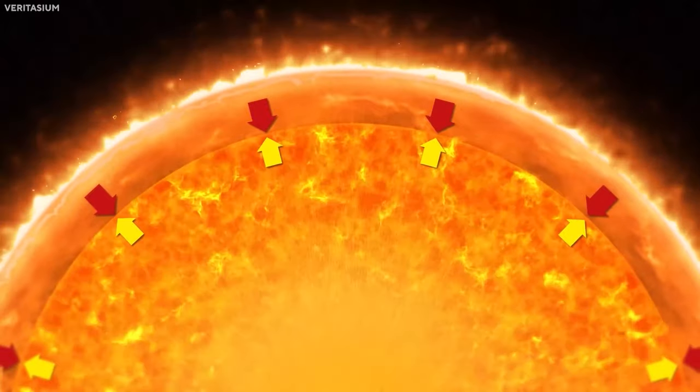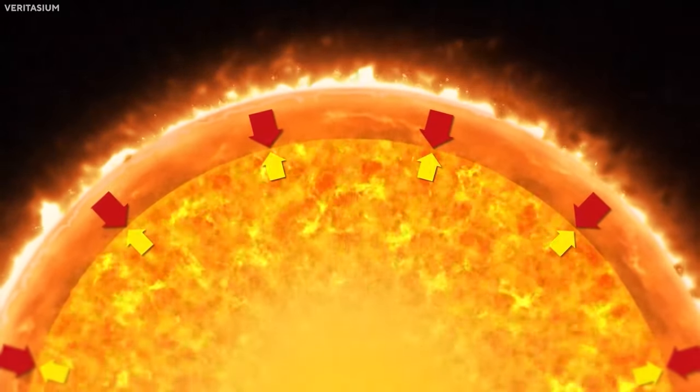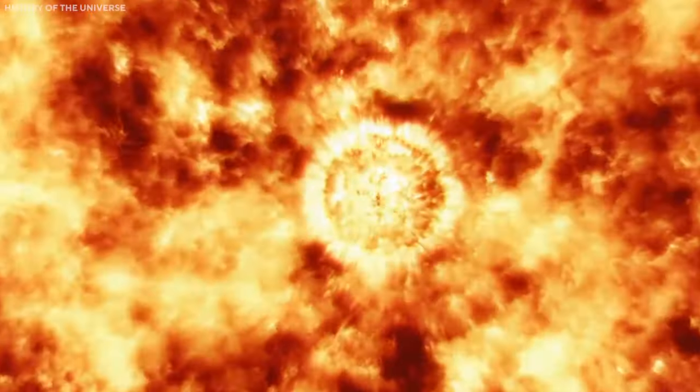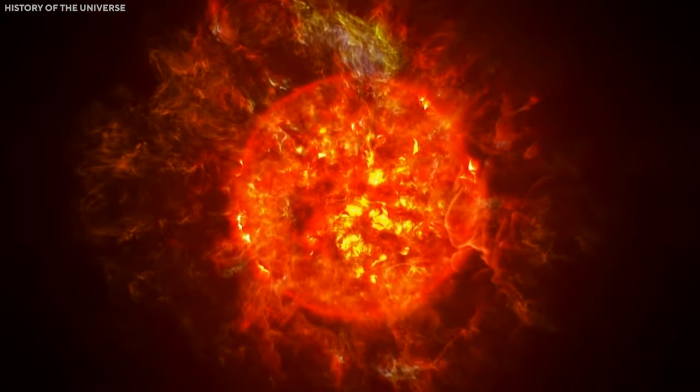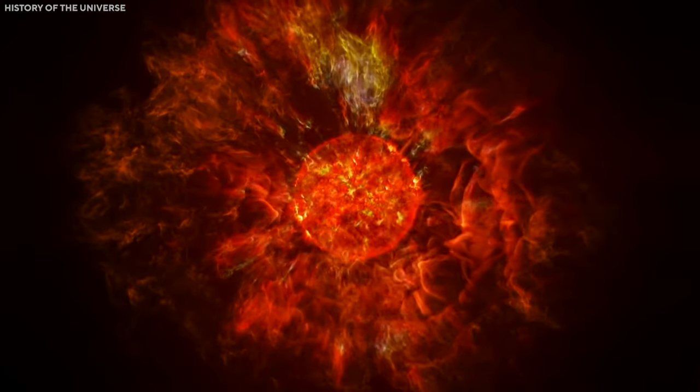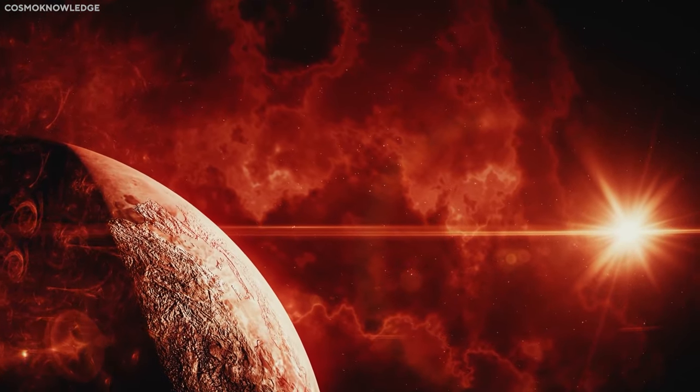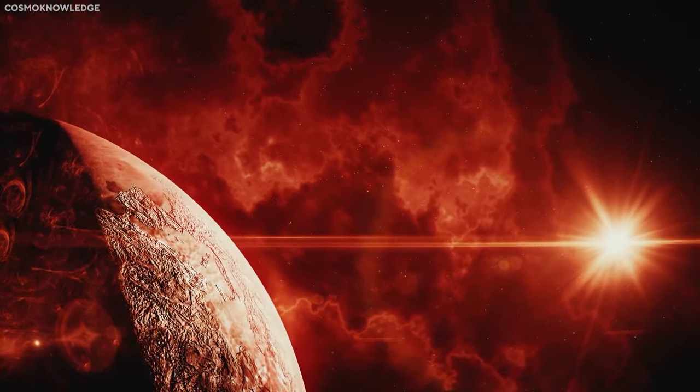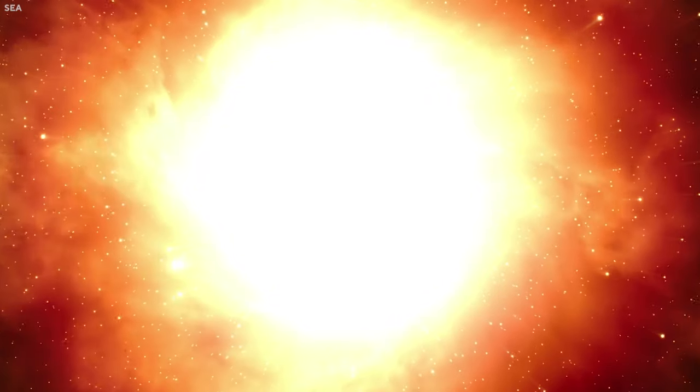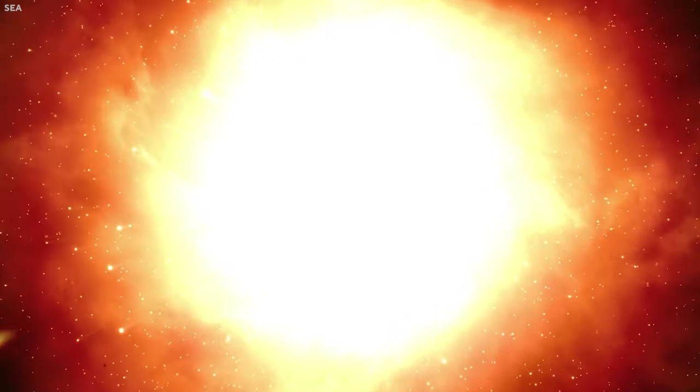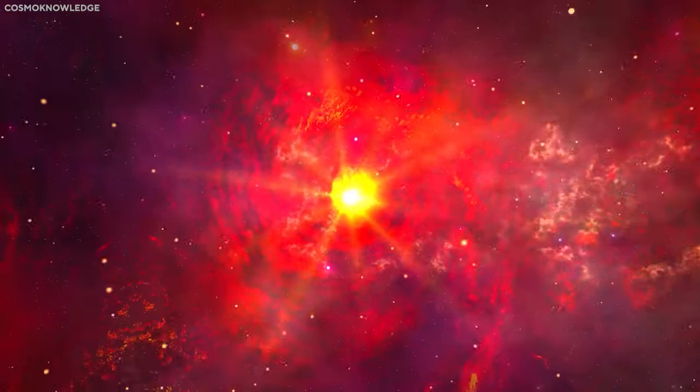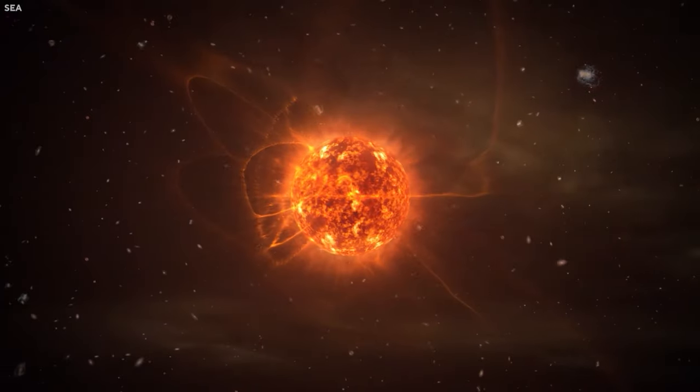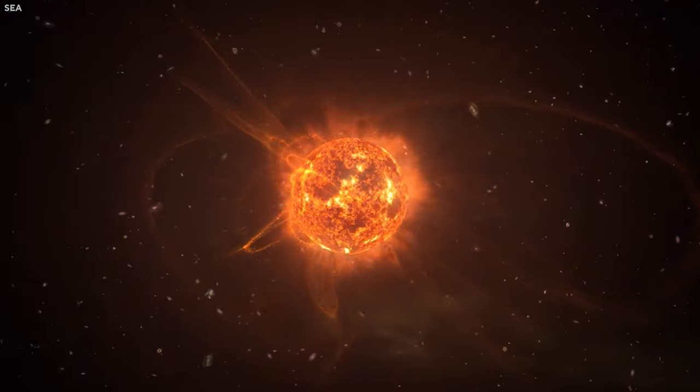As Betelgeuse transitions from the main sequence to the helium-burning phase, it undergoes a mind-boggling transformation into a red giant. But that's just the beginning of its cosmic spectacle. Over time, as the star's helium reserves dwindle, it relentlessly expands, embarking on an extraordinary journey of burning heavier and heavier elements through fusion reactions. And then, at its core, something extraordinary happens. Iron begins to take shape.